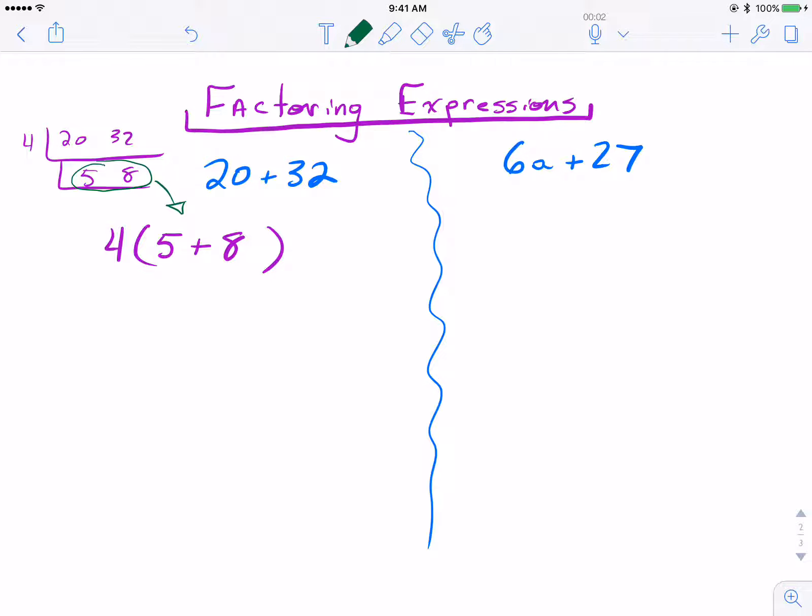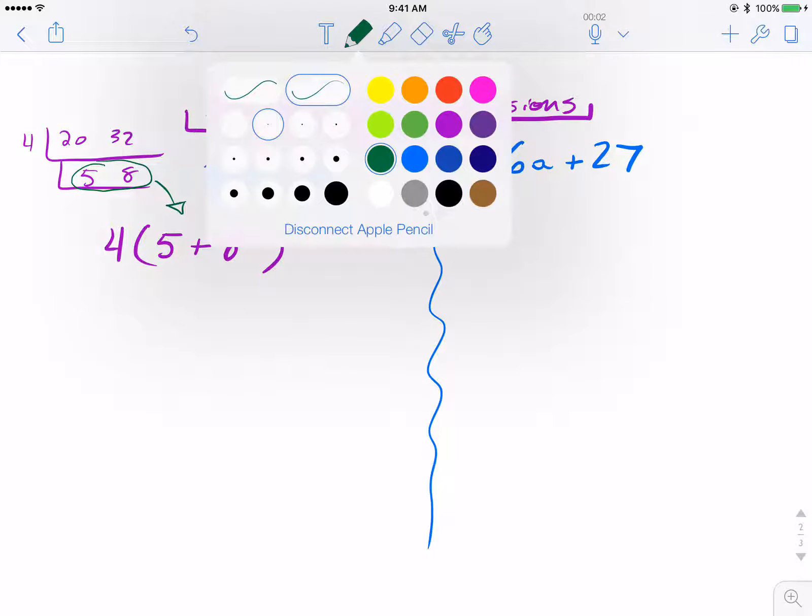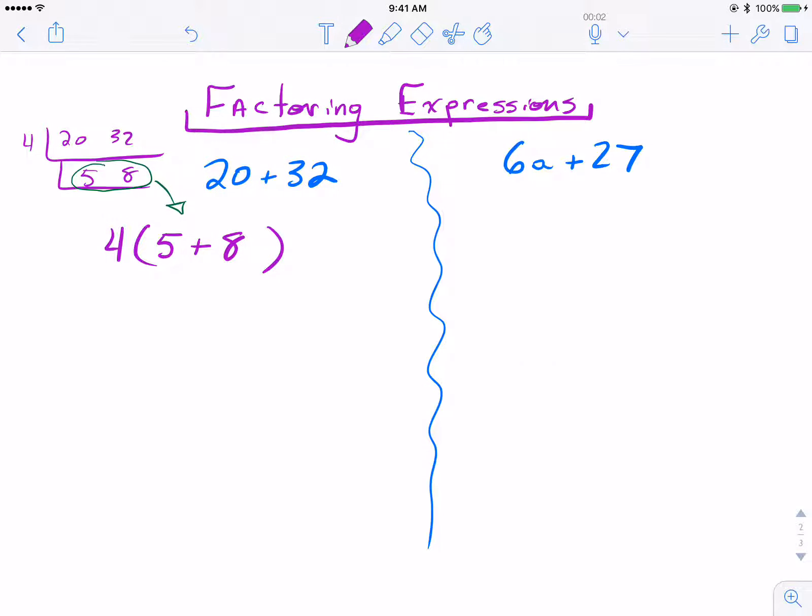Okay, on the right, I'm going to do the same thing. So for 6 and 27, I'm going to start by finding the GCF. So I pull out a 3 to start, 2 and 9, relatively prime, so I'm done.